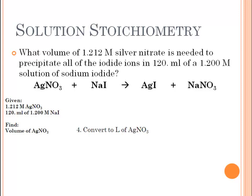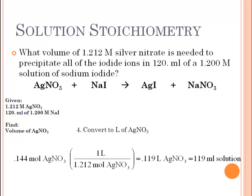Once we've calculated the moles of silver nitrate needed, the problem asks us to find the volume. We convert to liters of silver nitrate — we can't use molar mass here because that converts to grams. Instead, we use the molarity given in the problem. Notice that the molarity is inverted, meaning moles are on the bottom and liters are on top — we can do that, just as we've done with density. After the calculation, we find that 0.119 liters of silver nitrate are needed to precipitate all of the iodide ions.